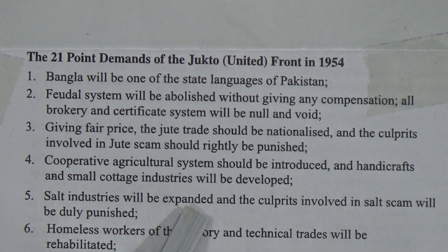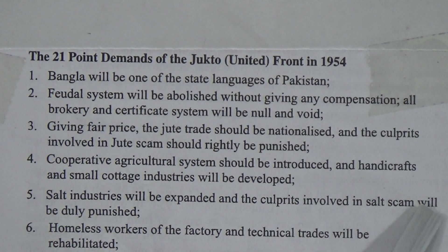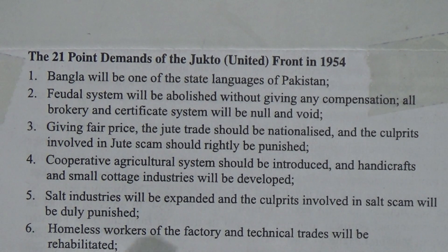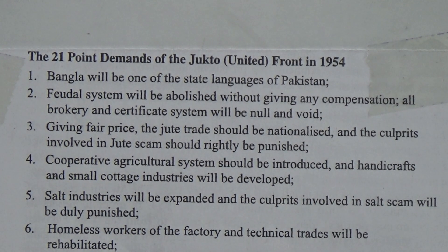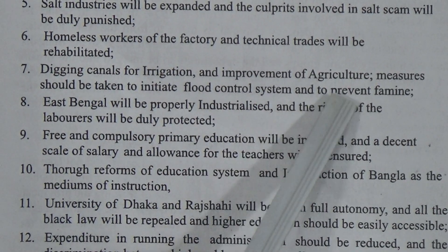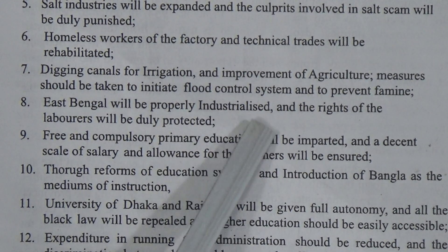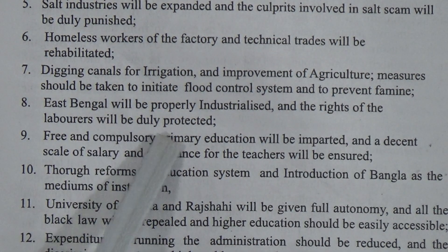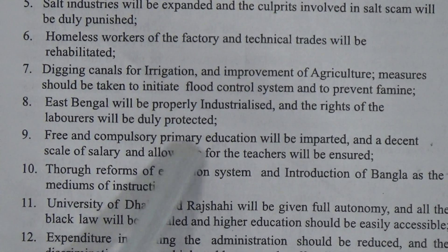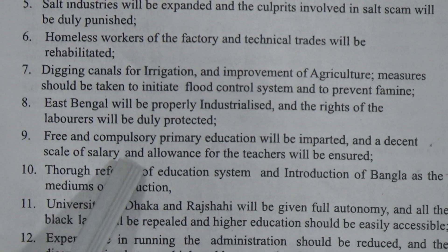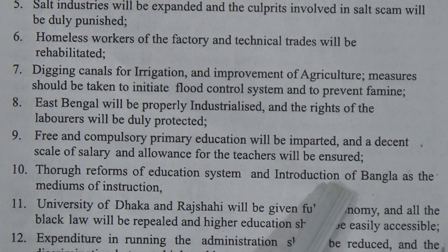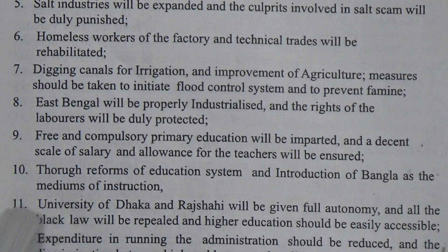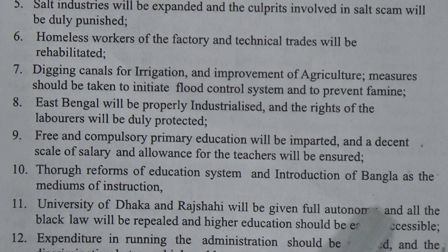Point 4: A cooperative agricultural system should be introduced and handicrafts and small cottage industries will be developed. Point 5: Salt industries will be expanded and culprits involved in the salt scam will be duly punished. Point 6: Homeless workers of factories and technical trades will be rehabilitated. Point 7: Canals will be dug for irrigation, flood control systems introduced, and measures taken to prevent famine. Point 8: East Bengal will be properly industrialized and the rights of laborers will be duly protected. Point 9: Free and compulsory primary education will be imparted and a decent salary scale for teachers will be ensured. Point 10: Reforms of the education system and introduction of Bangla as the medium of instruction.